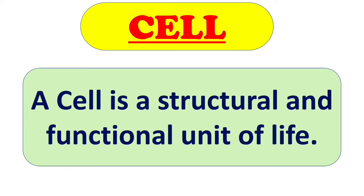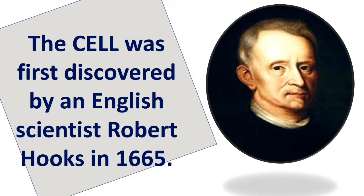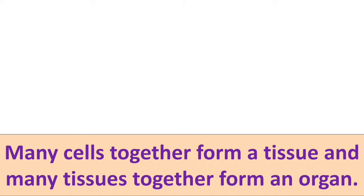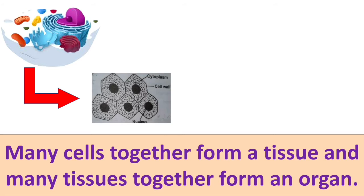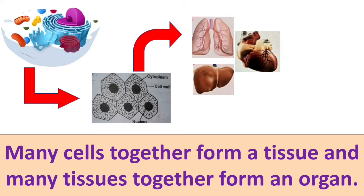So we can say that a cell can live independently on its own and perform all the life processes. That is why cells are called the building blocks of life. A cell is the smallest unit of life. The definition of a cell: it is a structural and functional unit of life. The cell was first discovered by English scientist Robert Hooke in 1665. Many cells together form a tissue, many tissues together form an organ, and many organs together form an organism.